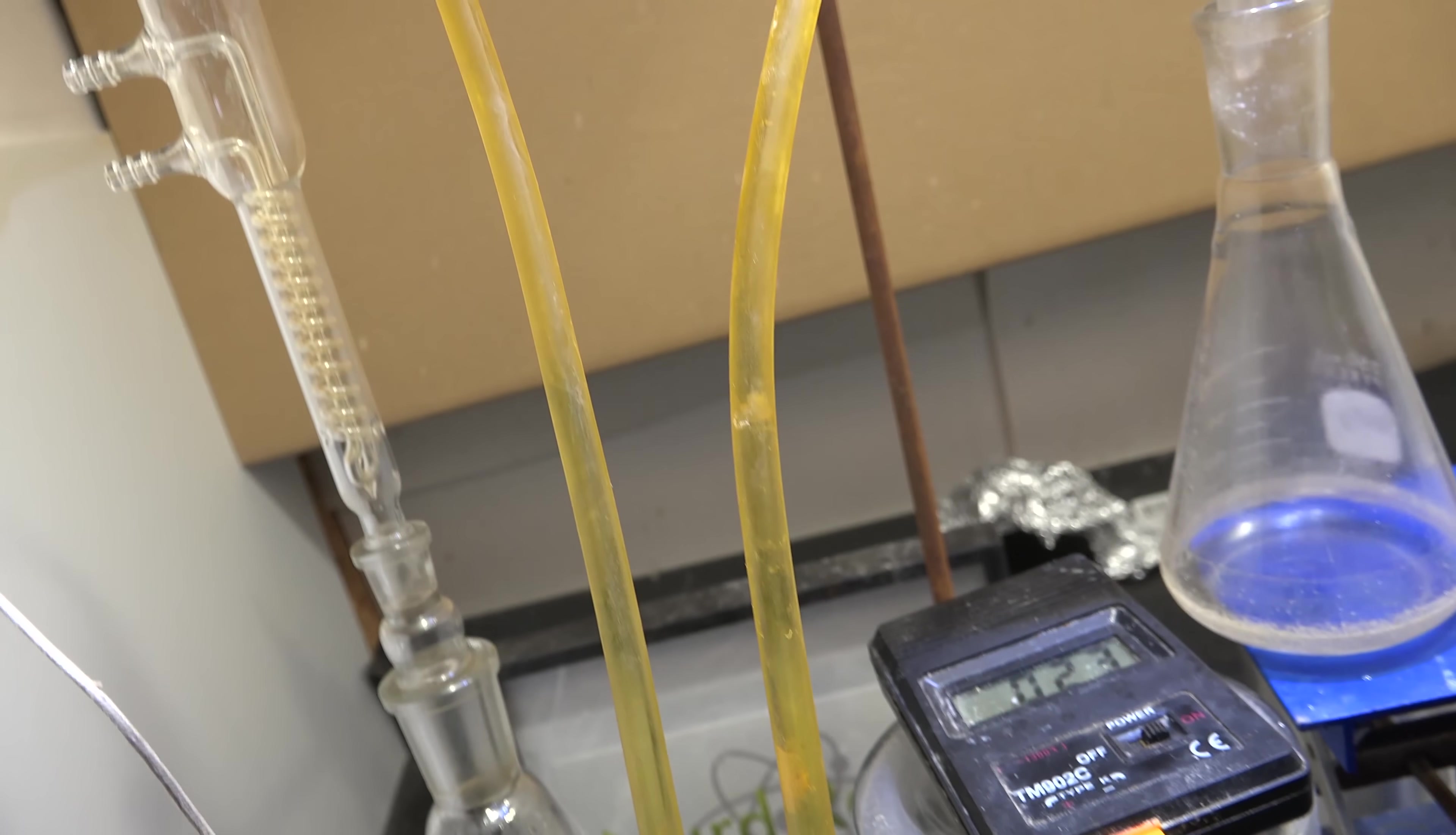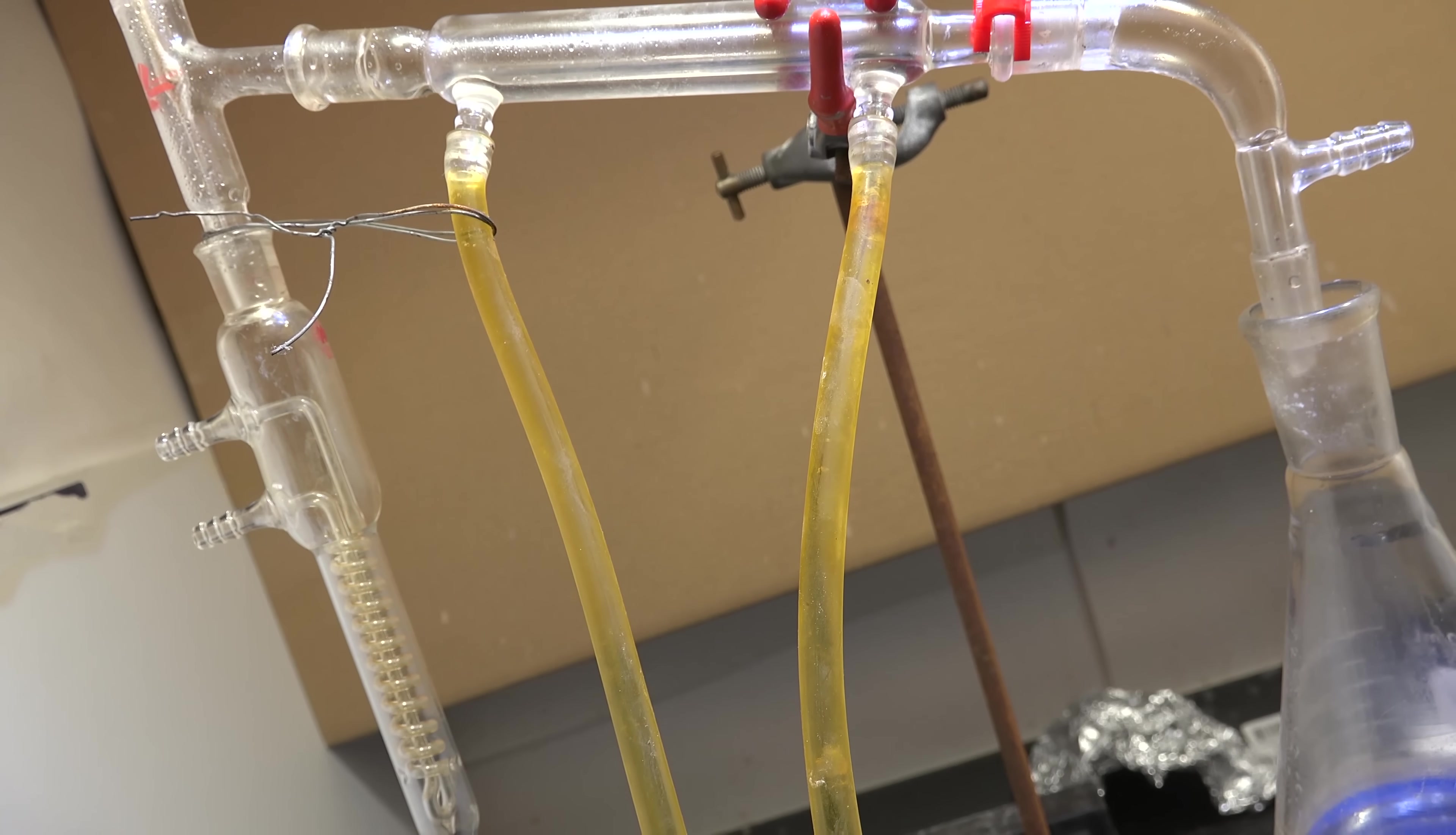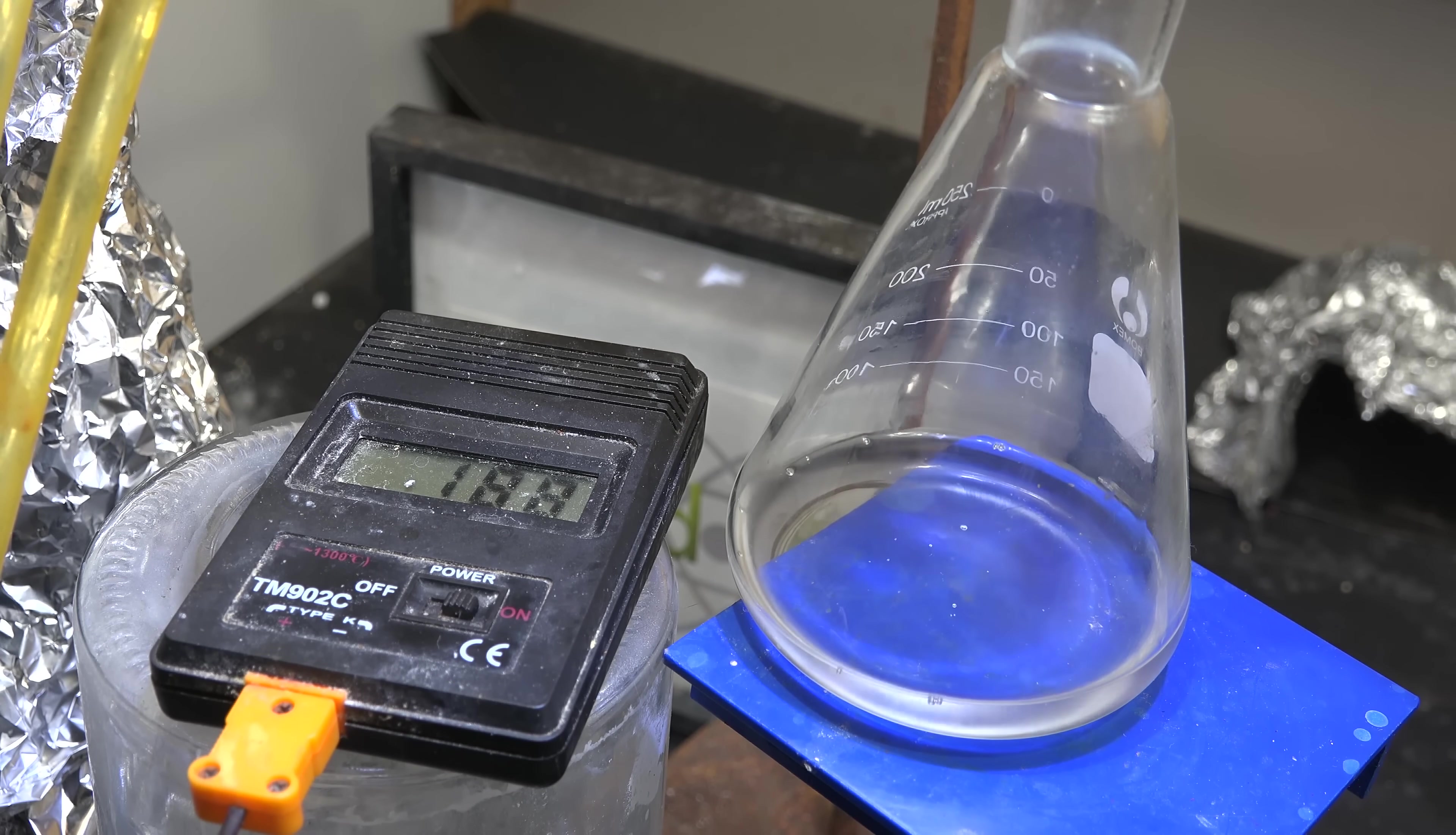I'm using a Dimroth condenser as a fractionation column since it has more surface area than a simple straight column. There is no coolant in it, it's just for fractionation. I then proceeded to start the fractional distillation process and things worked much better this time. I covered the apparatus in aluminum foil to keep the heat in, since even with a shorter column it still wasn't hot enough to boil through.